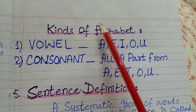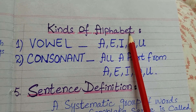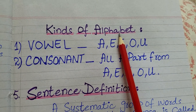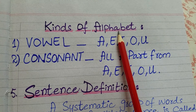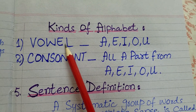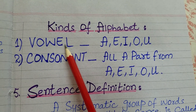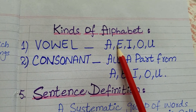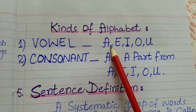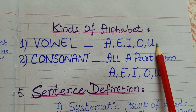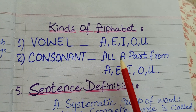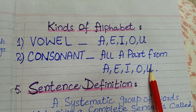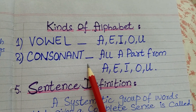Kinds of alphabets — huruf-e-tahajji ki aqsam. The English alphabet is divided into two parts. Number one: vowel. Number two: consonant. In English, there are five vowels: A, E, I, O, U. Consonants are all letters apart from A, E, I, O, U.